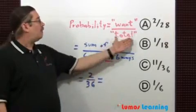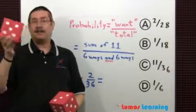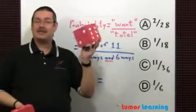What are the total number of possibilities? Well, there are 6 ways of getting any number on one die and 6 ways on the other.